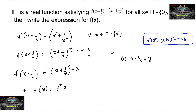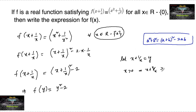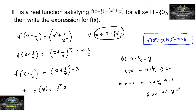Now let us determine the range of y for x ∈ ℝ \ {0}. For x > 0, we know x + 1/x ≥ 2. For x < 0, we know x + 1/x ≤ −2. So we can conclude that y ≥ 2 or y ≤ −2, which means |y| ≥ 2.